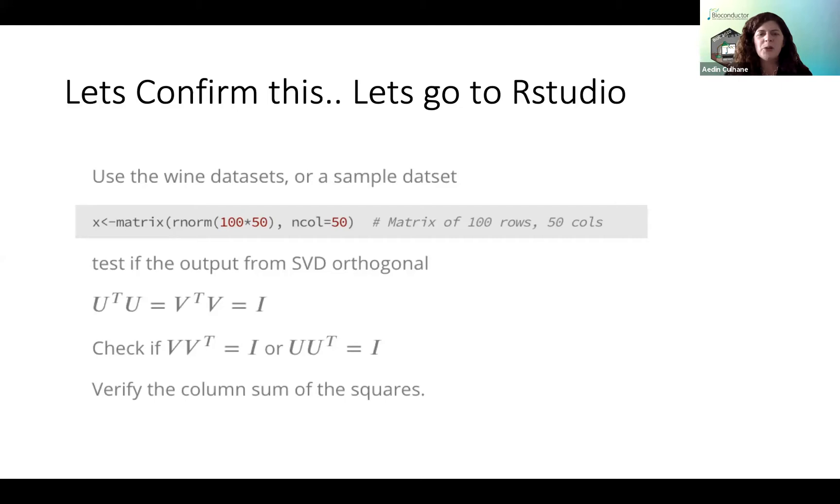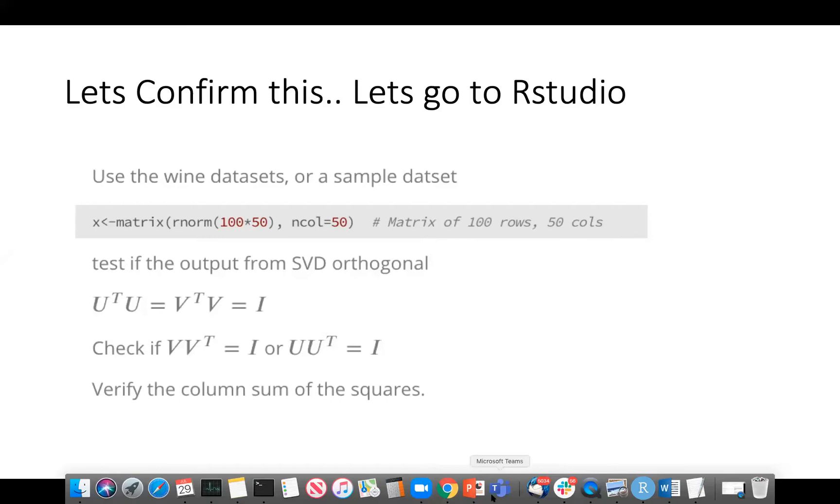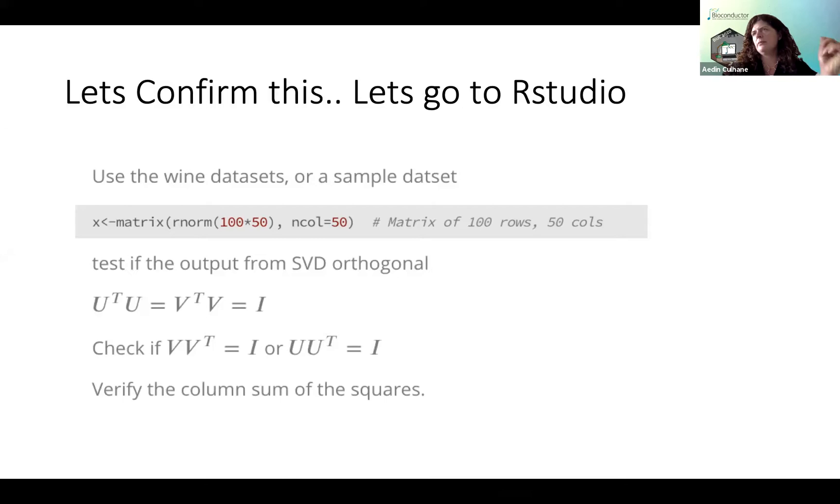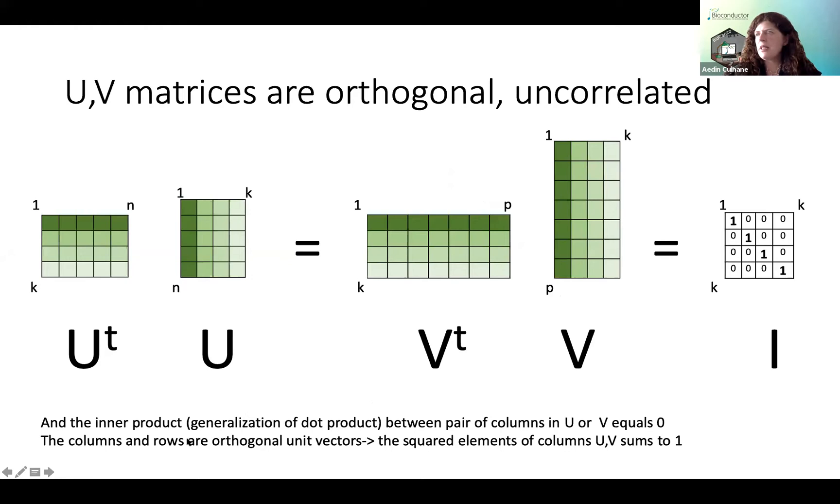Any other questions on how are we doing with the, where people are? We have a question about, where's the link to the vignette? Link to the vignette is in the chat. And then we also have another question clarifying, what does it mean by the column sum of squares in the task? So to sum up the squares of all of the elements per column, this is basically verifying these two statements here, that the inner product or the dot product is of the pairs. Actually, we're not doing this one, that the pairs of the columns, u or v equals zero. I haven't actually asked you to do that one. I've asked you to do the transpose of u by u and the transpose of v by v. And to verify that that's orthogonal. And then the second one here is the squared elements of the columns of u or v sum to one. So those are two important properties of orthogonal matrices.